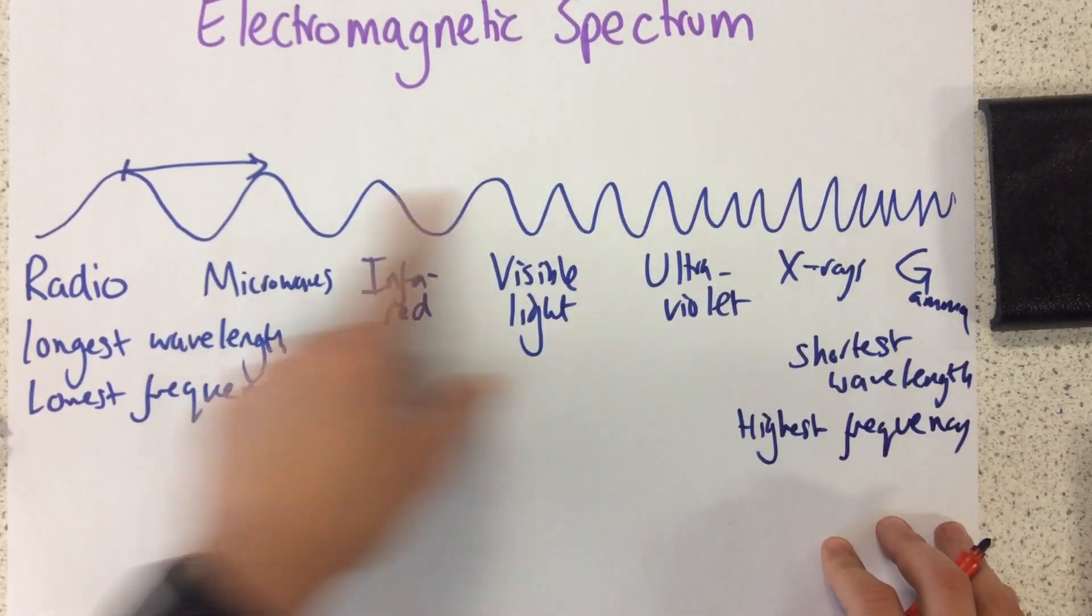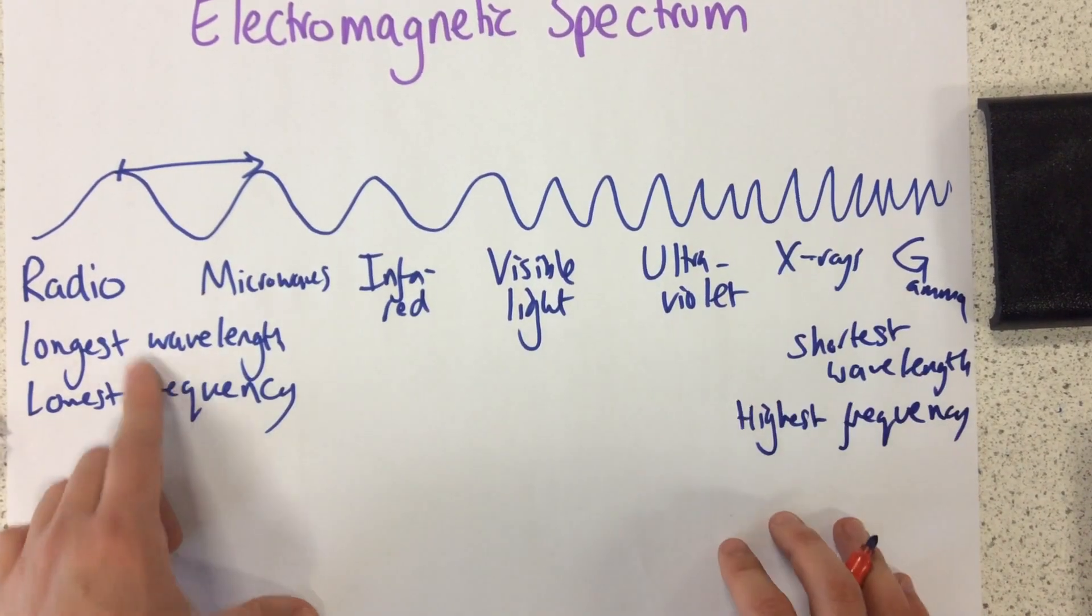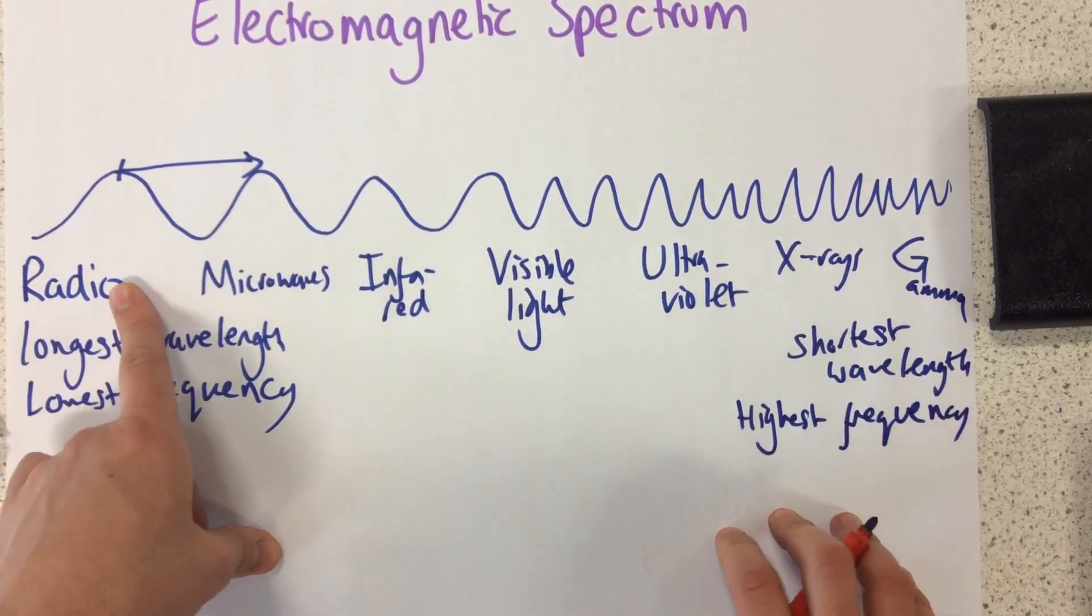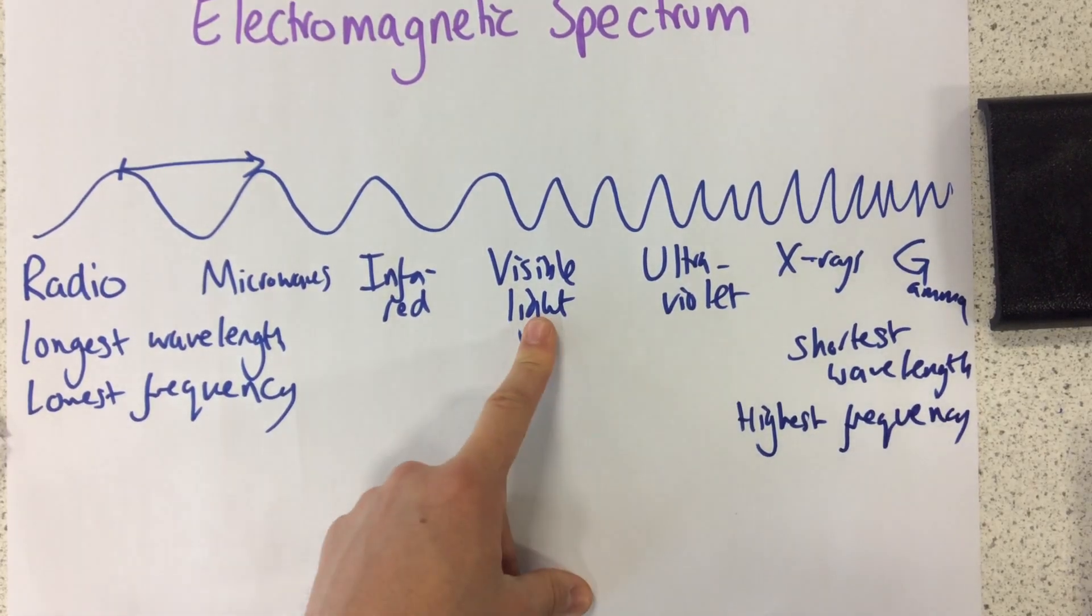So, all of these different waves are passing through our atmosphere. They can be used for different things. The only one that we can see is visible light.